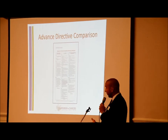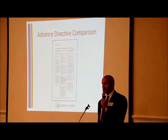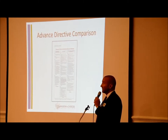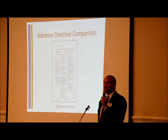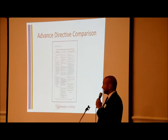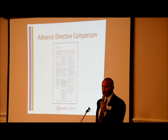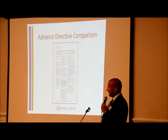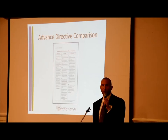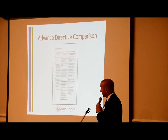Our document doesn't include any stealth statements. In the Five Wishes document, there's a stealth anti-choice statement that says, 'I don't want anything done or omitted that would result in my death if the intention is to end my life.' If Terry Schiavo had made that directive using Five Wishes and not crossed out that section, her parents could say that her husband was trying to discontinue her artificial nutrition and hydration for the purpose of ending her life, and it could have invalidated the entire directive.